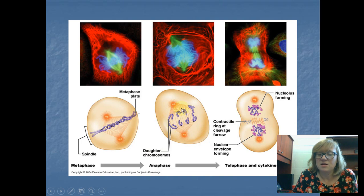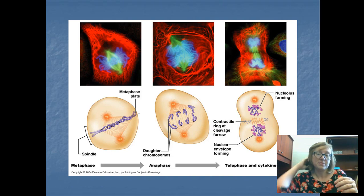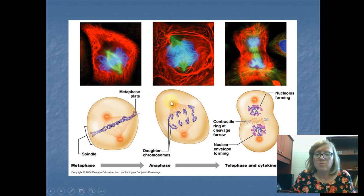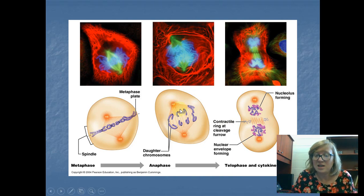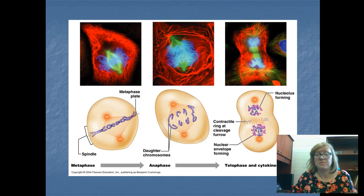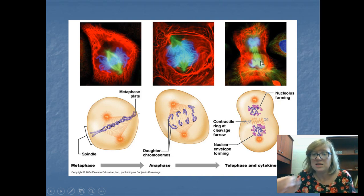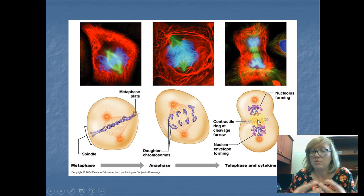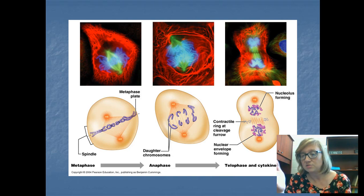Then in anaphase, the chromosomes move away from each other, away from the middle. A for away. The centrioles are reeling them in — the spindle that's attached is being pulled in and it pulls them apart. Then in telophase, we have two new nuclei and we can start to see two new cells. Once the cytoplasm splits in cytokinesis, we have our fully realized two new cells. That's mitosis — those are the phases you need to know.